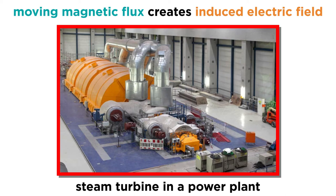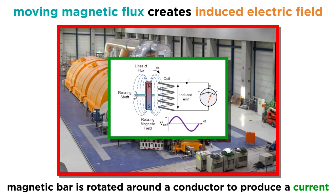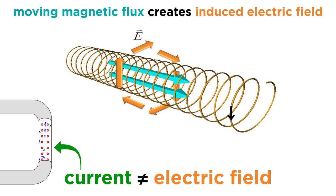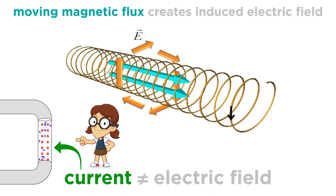This principle governs all power plants that generate electricity using turbines. Simply put, a magnetic bar is rapidly rotated around a conductor to produce a current. However, a current is just a set of moving charges, it's not the electric field itself. The magnetic field only induces this field, which then creates a vector field that influences the charges to move.